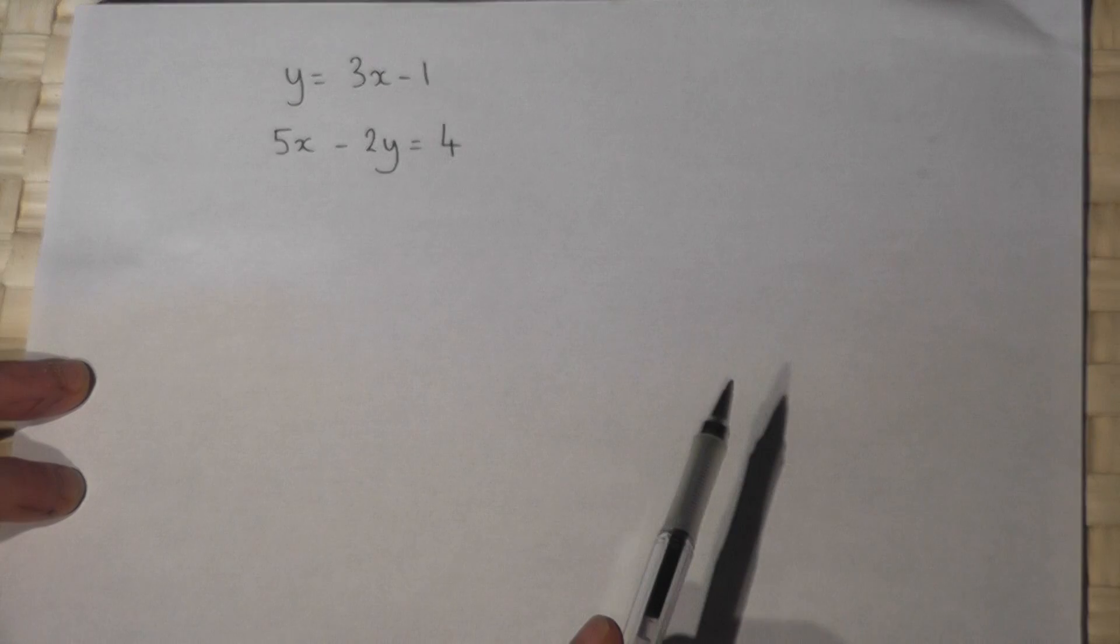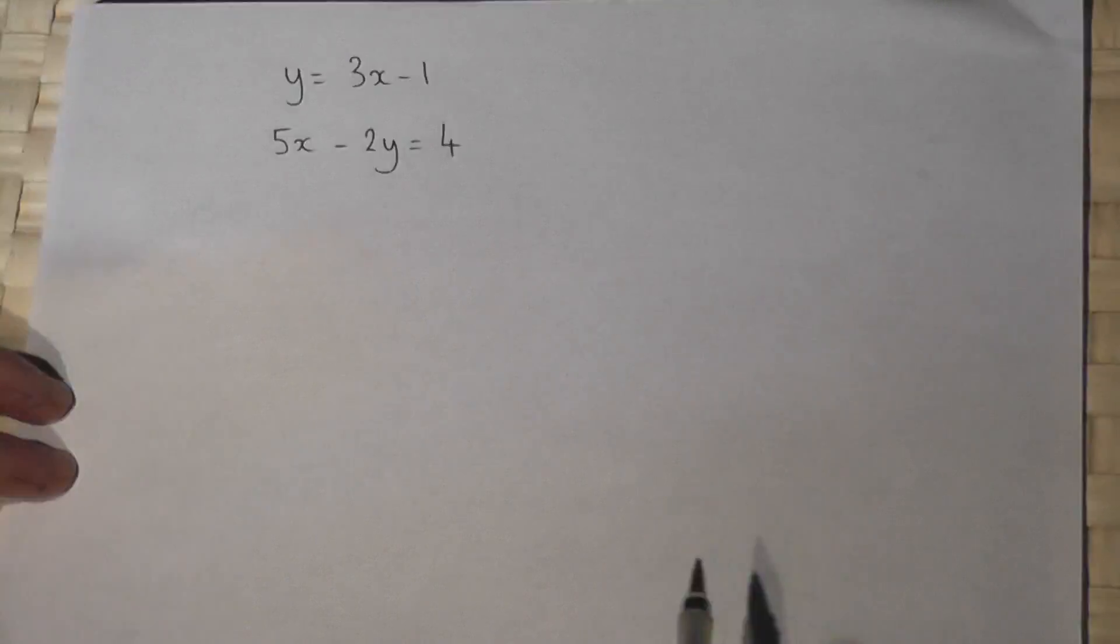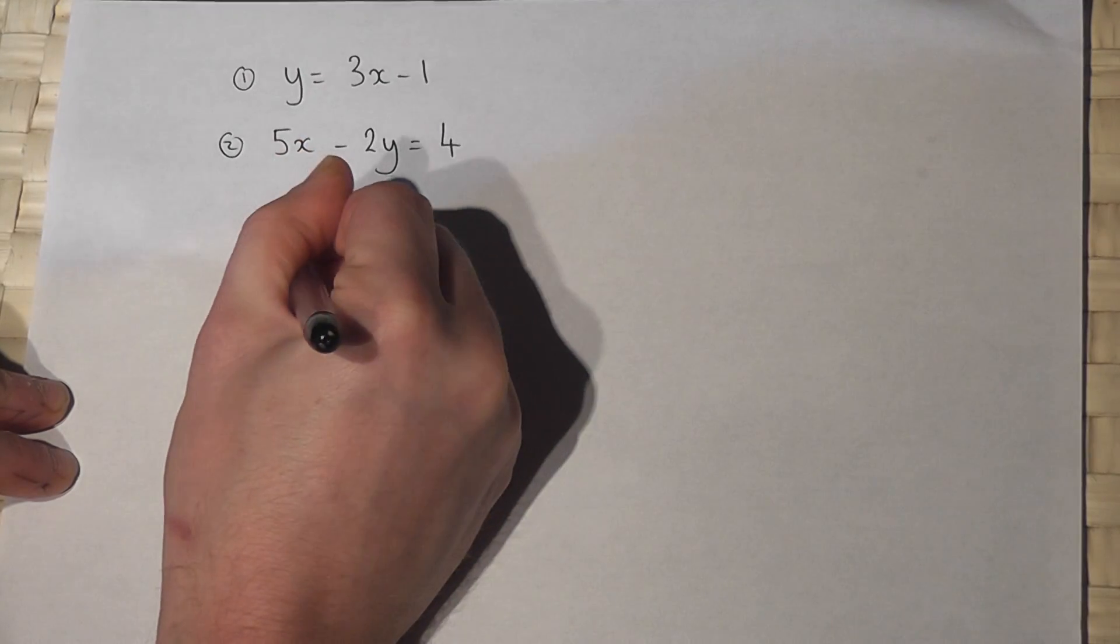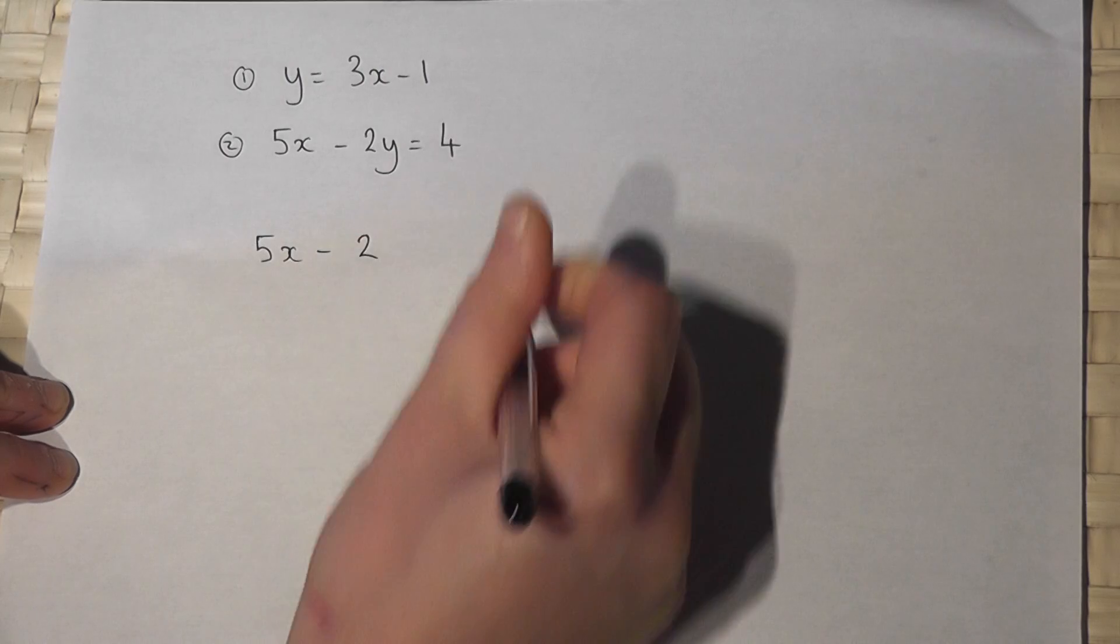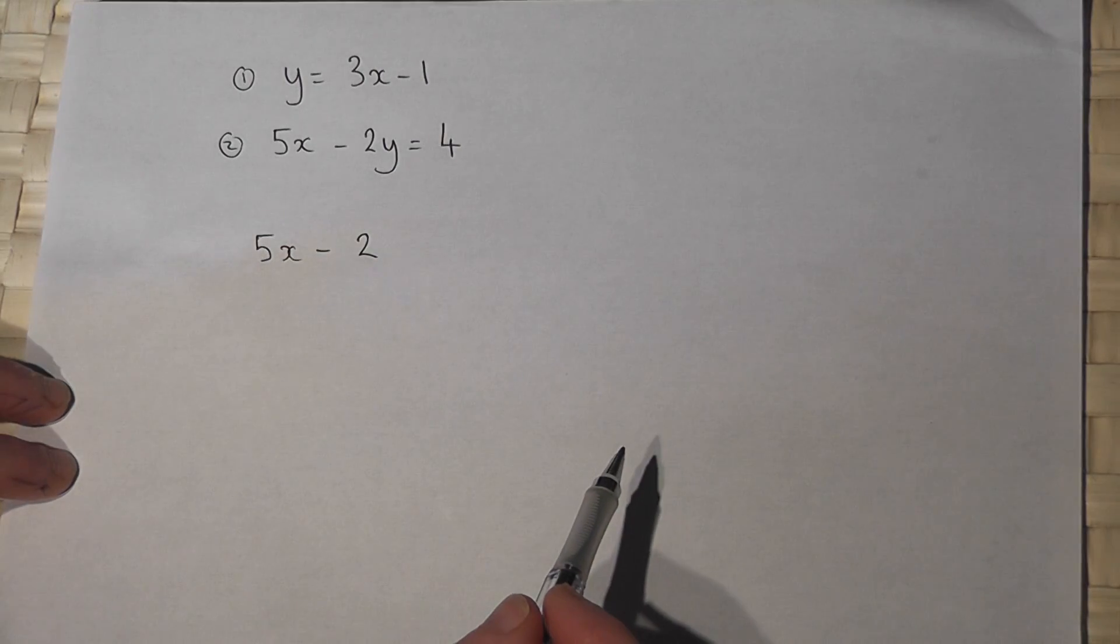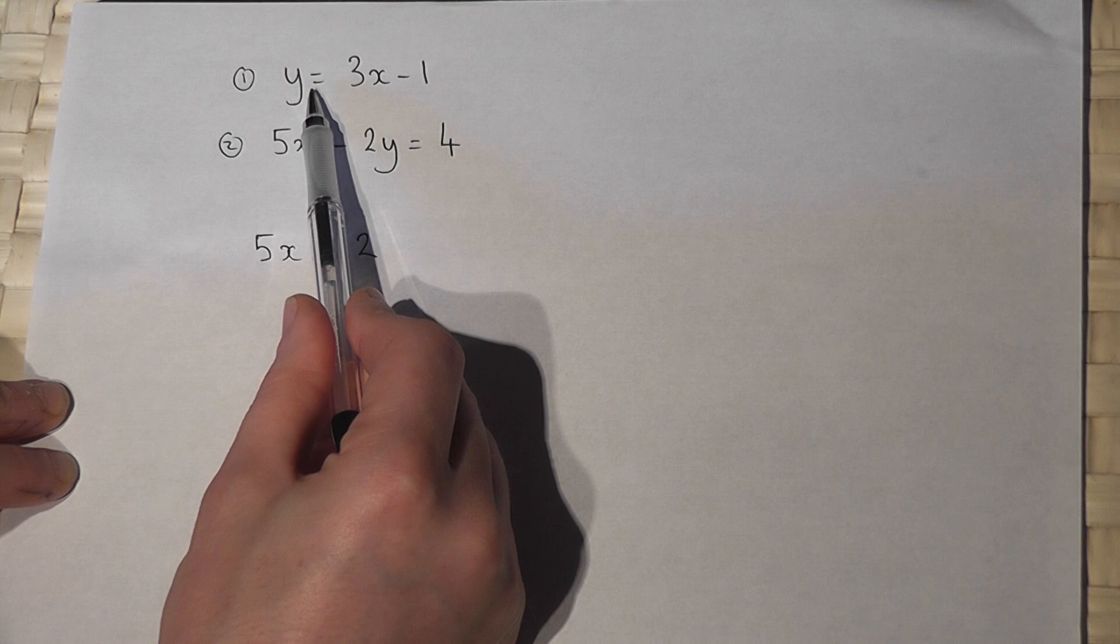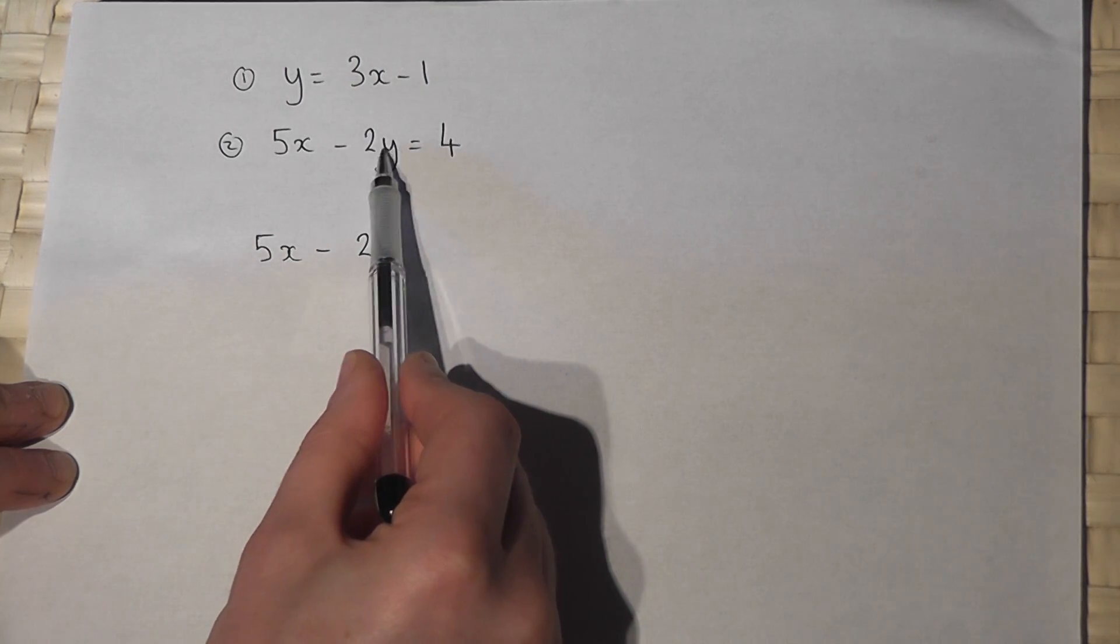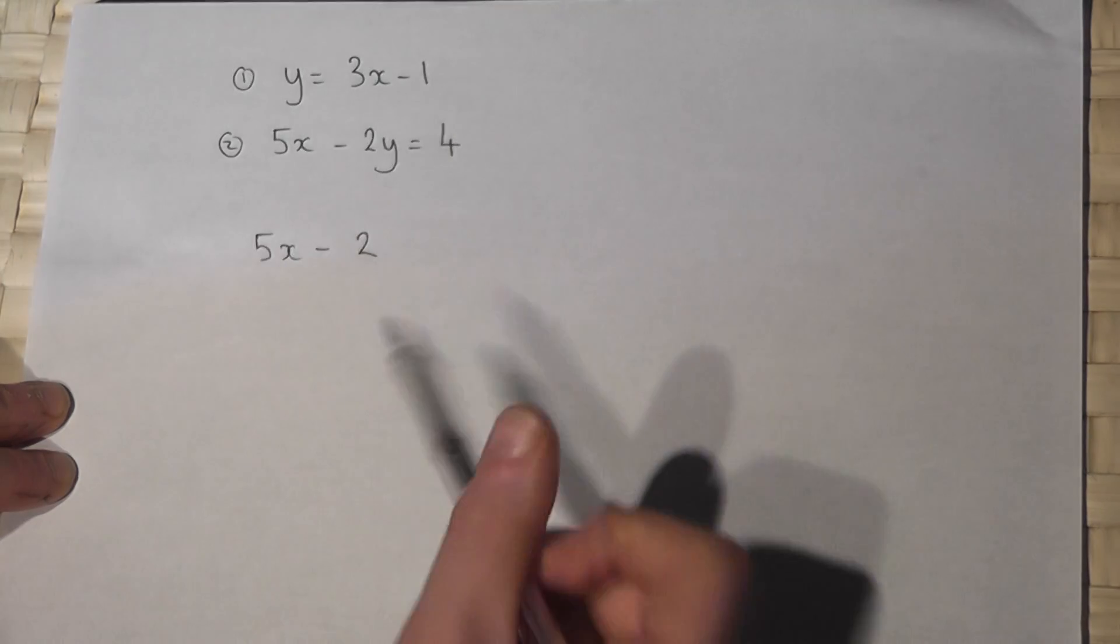Now I can solve this through a process called substitution. If I look at equation 2, I've got 5x take away 2 lots of y. But I know what y equals in terms of x, so I can replace this y here by 3x minus 1.